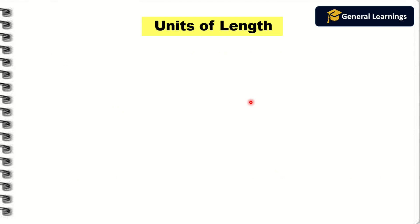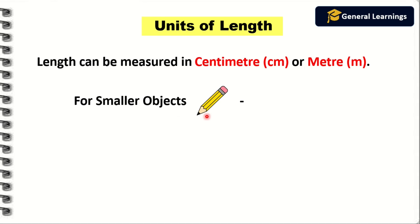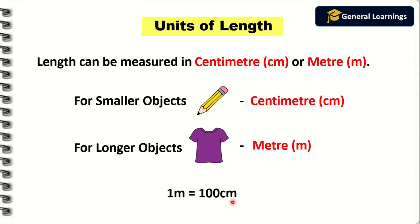Next we are going to see the unit of length. Length can be measured in centimeters or meters. For smaller objects like a pencil or eraser, we use centimeters to measure their length. For longer objects like a dress or table, we use meters to measure their length. One meter equals 100 centimeters.